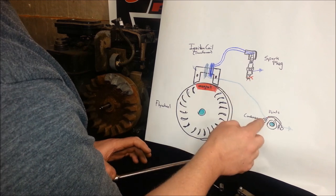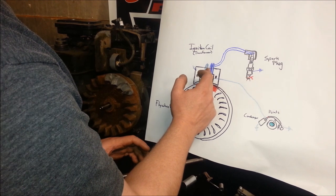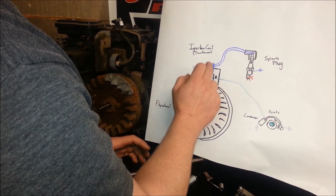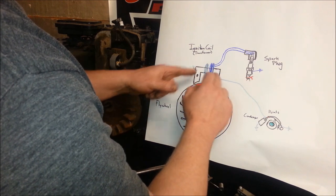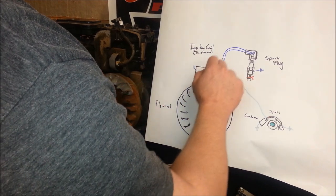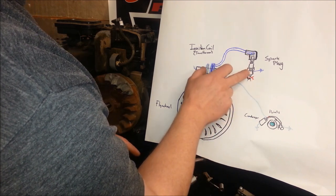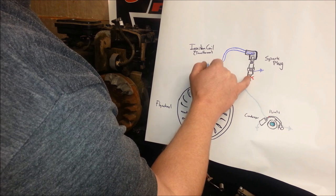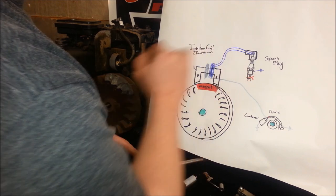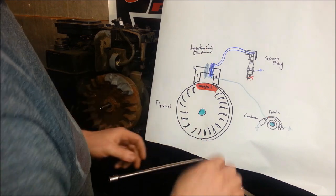But at the same time it's collapsing, the condenser pushes electricity back into our primary winding which gives a boost to our secondary and as they're collapsing, it sends a huge spark through our spark plug wire down into the spark plug and jumps the little ground, the little gap inside our spark plug that leads out to ground. That little air gap right there. And that's how it works.